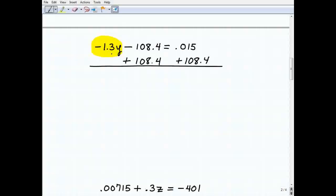All right. So we've got negative 1.3y minus 108.4 equals 0.015. So I'm going to add this 108.4 to both sides of the equation. And it gives me negative 1.3y equals, because the 108.4s go away. So now I'm going to go to my calculator. I've got 0.015. I'm going to add 108.4, and I get 108.415. So this is where we're at now.